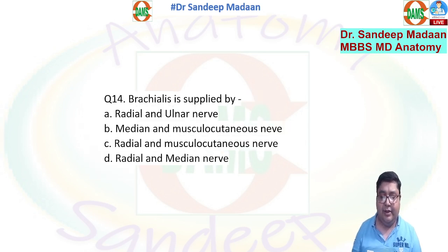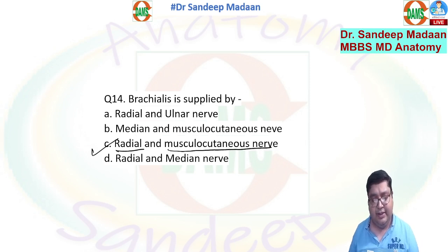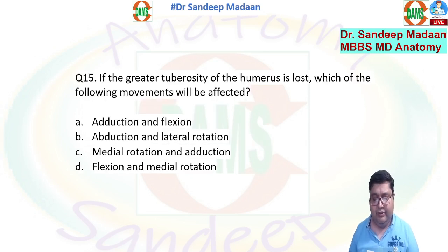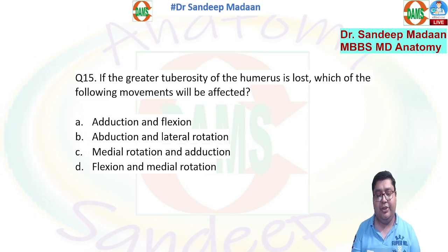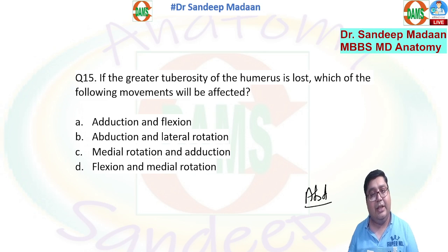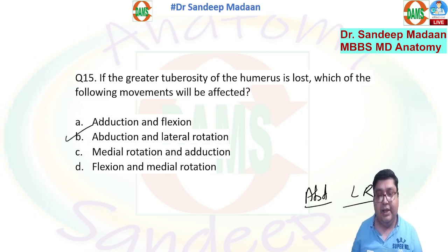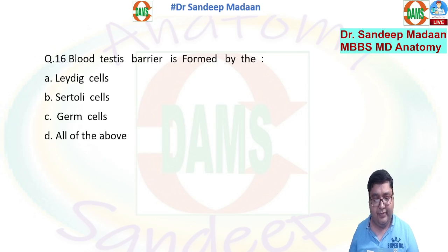Brachialis is a muscle of the anterior compartment of the arm. It is supplied by the musculocutaneous nerve but additionally also by the radial nerve — C is the correct answer. Such muscles with dual nerve supply are called hybrid muscles. If the greater tuberosity is lost, then supraspinatus is gone — abduction is affected. Additionally, infraspinatus and teres minor both provide lateral rotation, so abduction and lateral rotation are both lost — B is the correct answer.